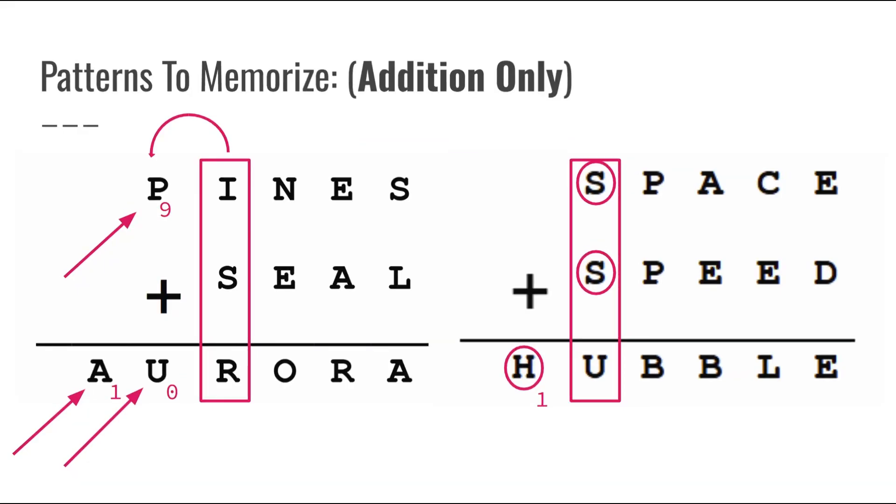Now before we move on to the next slide, I just want to make sure that the first letter in this bottom row of letters cannot be a 0 because then it would not be a number. So this means that S in this second example cannot equal 3 or some number similar to that because then it would make H equal to 0. Therefore, going against our rule that no number can ever start with 0.